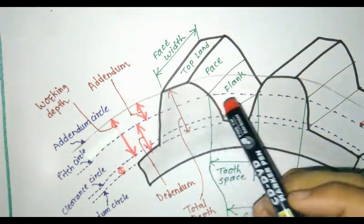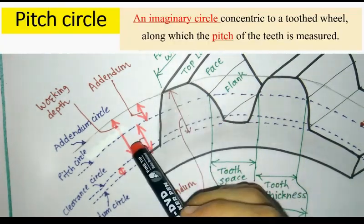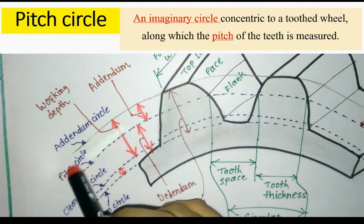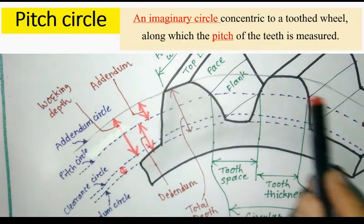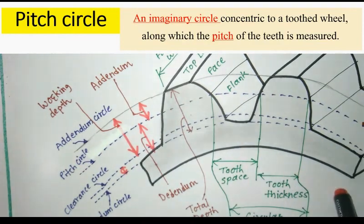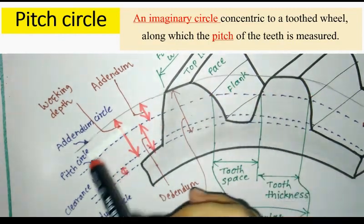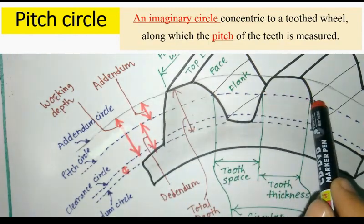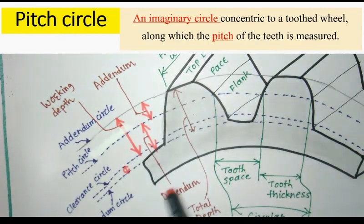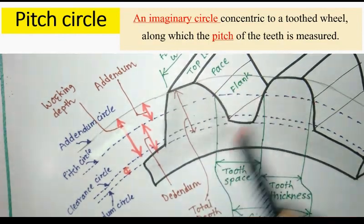This is a gear tooth profile and today I am going to show you the basic terms used in a gear tooth profile. The first one is the P circle. P circle is an imaginary circle concentric to a tooth, along which the pitch of teeth is measured.